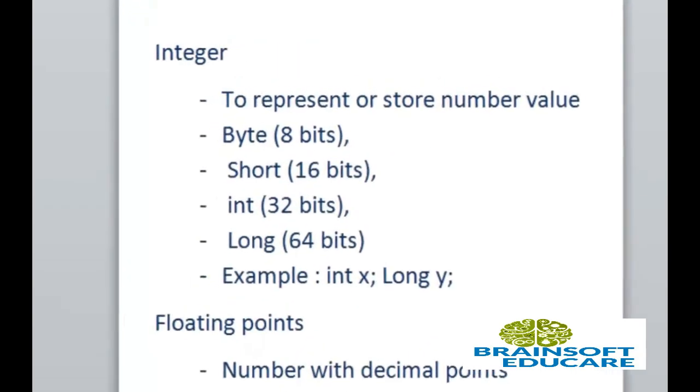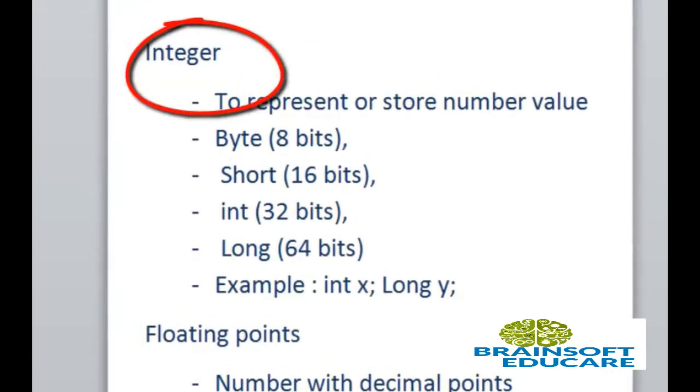First, integer. To represent or store number values, it contains four data types: byte, short, int, and long. Each data type occupies some memory space. Byte occupies 8 bits memory, short occupies 16 bits memory, int occupies 32 bits memory, long occupies 64 bits memory.